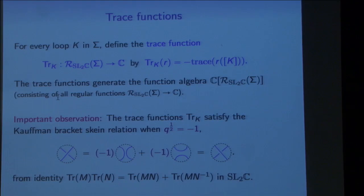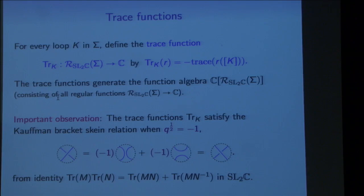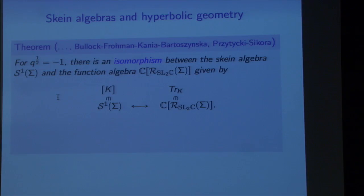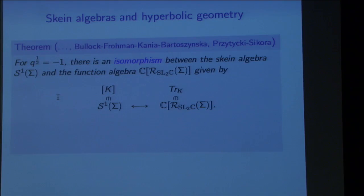This revelation was in the late 1980s/early 1990s — by Bullock, Frohman, Kania-Bartoszyńska, and Przytycki-Sikora. What they showed is that there's actually an isomorphism: for every knot, assigning to it the trace function that corresponds to that knot gives an isomorphism between the skein algebra with Q equals −1 and the regular functions on the SL2C character variety.